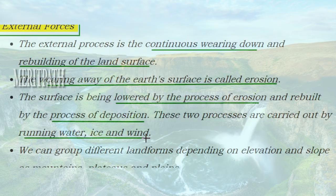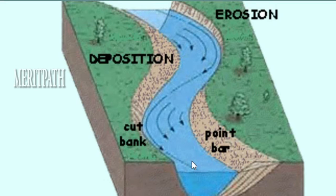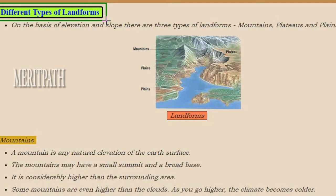These processes of erosion and deposition are carried out by running water, ice, and wind. Depending on the elevation and slope of the land, some cities are situated on hills with different elevations, while hill stations and mountain areas also have varying elevations. Based on elevation and slope, landforms are classified as mountains, plateaus, and plains. Erosion lowers the surface while deposition rebuilds it.